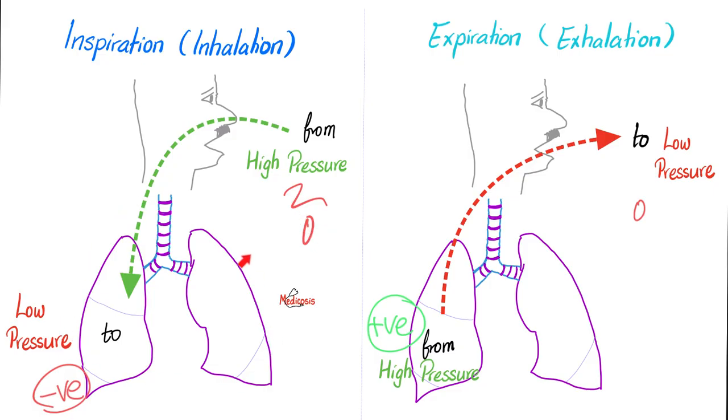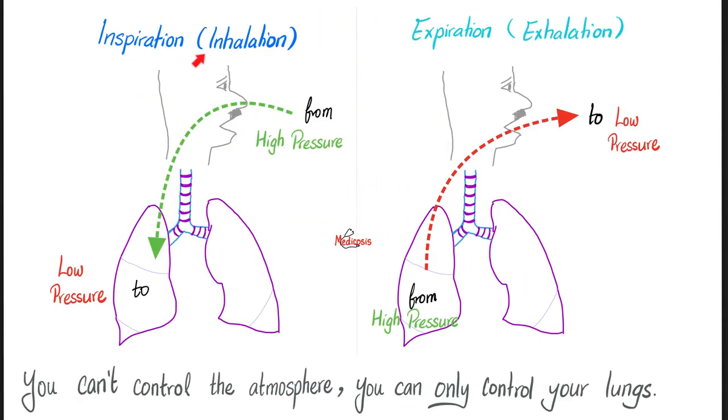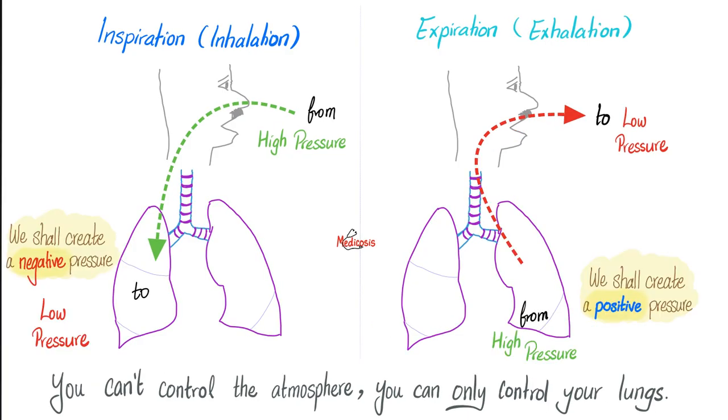This will increase the volume of the chest wall but decrease the pressure. When you lower the pressure, you create a negative pressure, which means a pressure that's lower than the atmosphere. Negative pressure pulls. So, the air is going to leave the atmosphere and will enter into your lungs. This is what we call inspiration. This video will discuss the basics. If you want to dig deeper, check out my pulmonology playlist here on YouTube, a video titled Normal Quiet Breathing.